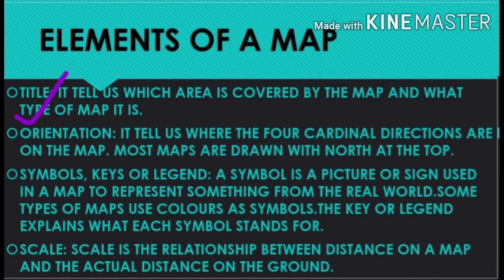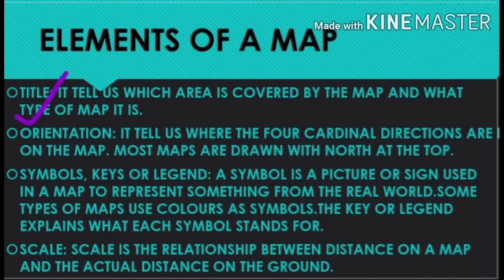The next topic is the elements of a map. The first element is the title. It tells us which area is covered by the map and what type of map it is — whether it covers a climate region, desert region, or vegetation, and whether it is a physical, political, city, or road map.